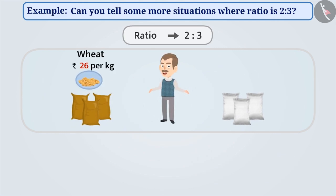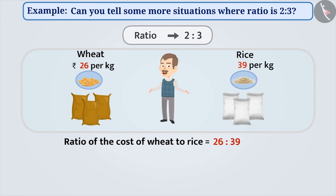If a shopkeeper sells wheat at the rate of 26 rupees per kg and rice at the rate of 39 rupees per kg, then the ratio of the cost of wheat is 26 is to 39. Upon dividing the numerator and denominator by 13, we get the ratio 2 is to 3. Think of some more similar situations in your daily life.